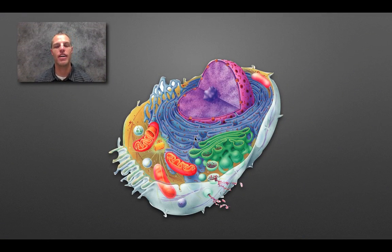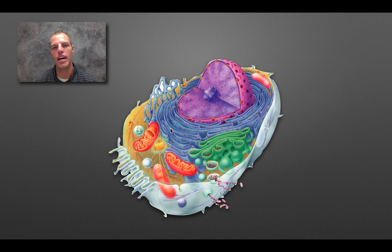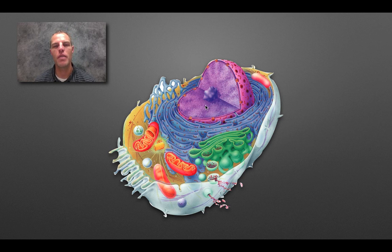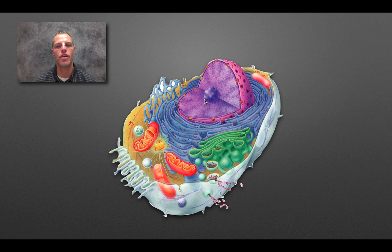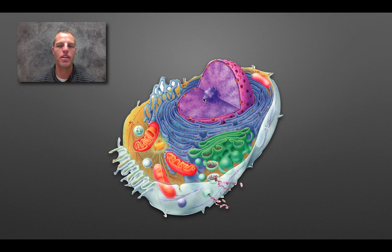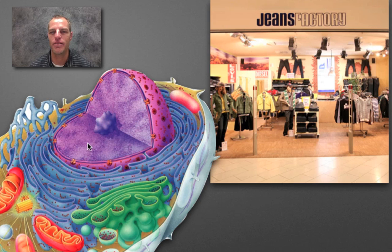If you're looking at a cell, this is obviously much different than what we looked at in the previous screencast on the structure of a virus — we have all these working organelles and parts. There are two main factories, in this analogy, that viruses have to overtake or hijack to reproduce. Why only two? Because there are only two parts to a virus: DNA or RNA genetic material, surrounded by a protein coat.